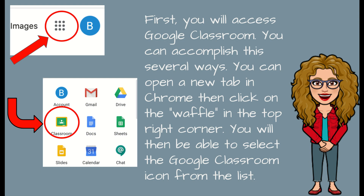Then you're going to click on the waffle in the top right corner. I call it the waffle — I don't know what the technical name for it is, but it looks like a waffle to me. It's the nine dots that are up in the top right-hand corner. You're going to click on that, and a drop-down menu is going to come down with a bunch of different icons, and you're going to be able to select the Google Classroom icon from that list.